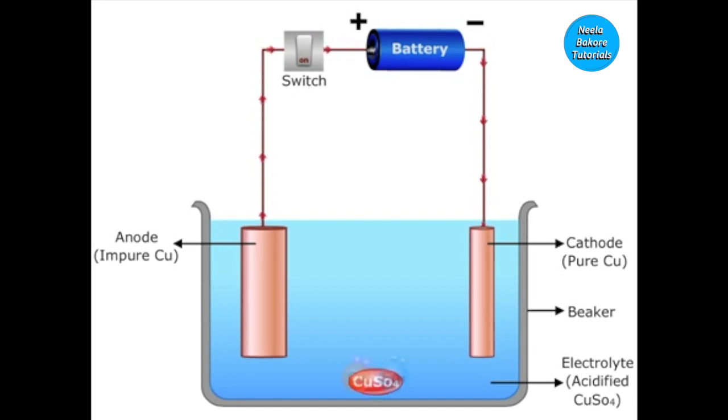At the anode, copper atoms lose two electrons and change into copper ions. These copper ions come into the electrolyte. The copper ions from the electrolyte get attracted towards the cathode.